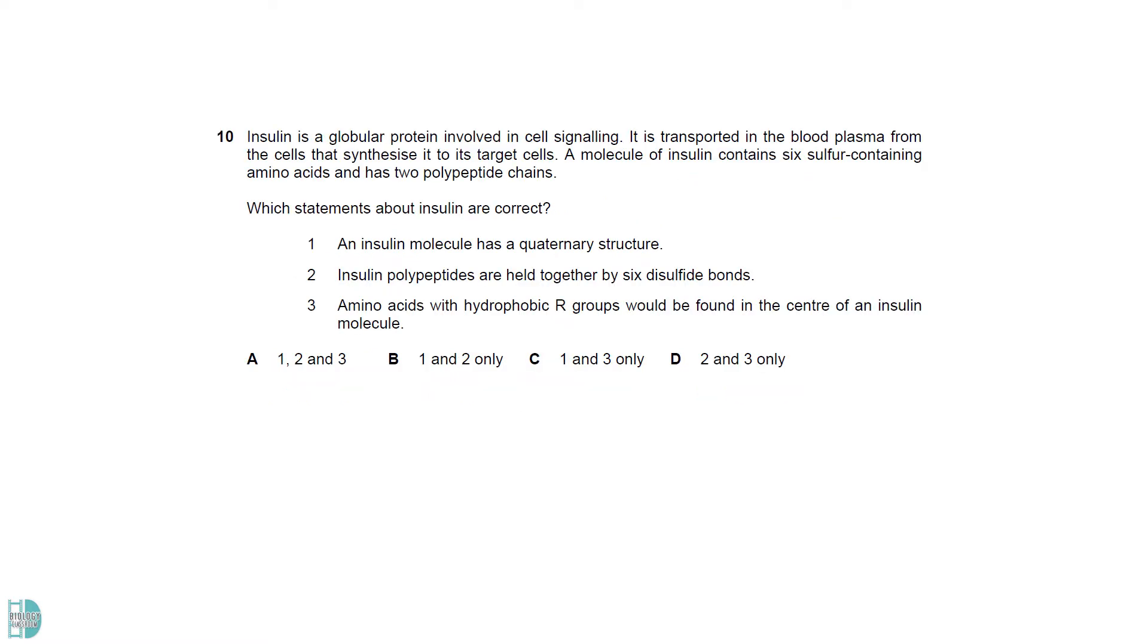One is correct as the question says that insulin has two polypeptide chains. Two is wrong as there are only six sulfur containing amino acids. Two of them can form a disulfide bond, so the maximum number of disulfide bonds is only three. Three is correct as the hydrophobic core is found in all globular proteins.